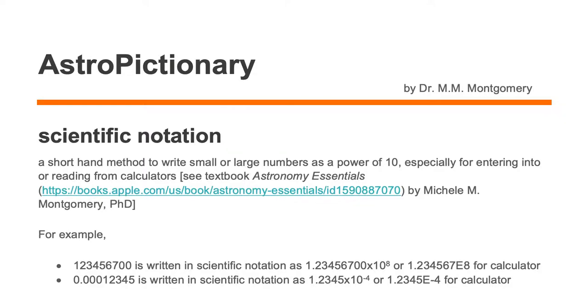Scientific notation is a shorthand method to write small or large numbers as a power of 10, especially for entering into or reading from calculators. Let's take a look at some examples.